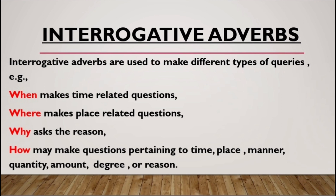The first one is 'when.' As the word suggests, it asks questions related to time. For example: 'When did you go for lunch?' — the answer would be 'in the afternoon' or 'at two o'clock.' The answer is in terms of time, so 'when' makes justice to that answer.